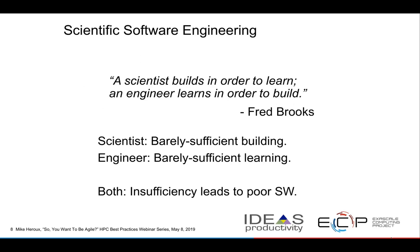Another thing worth keeping in mind is this quote from Fred Brooks, who wrote The Mythical Man-Month, a well-regarded software engineering expert. He says that a scientist builds in order to learn and an engineer learns in order to build. A scientist doing software is doing barely sufficient building in most instances, because their real objective is the scientific results — to publish a paper, get insight, prepare for a meeting. The challenge is that if we don't put enough effort into the building as a scientist, or the learning as an engineer, we get poor software.